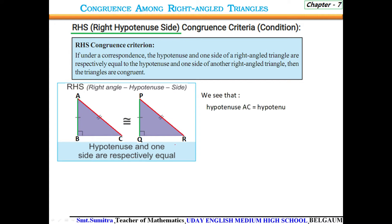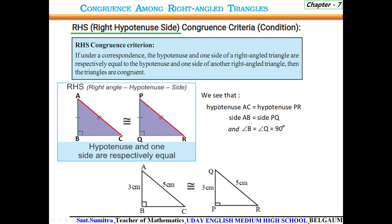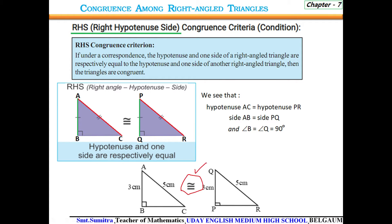Here we see that hypotenuse AC equals hypotenuse PR, side AB equals side PQ, and angle B equals 90 degrees while angle Q is also 90 degrees. For example, AC is 5 centimeters and hypotenuse QR is also 5 centimeters; side AB is 3 centimeters and side QP is 3 centimeters; angle B is 90 degrees and angle P is also 90 degrees. Therefore, both triangles are congruent.